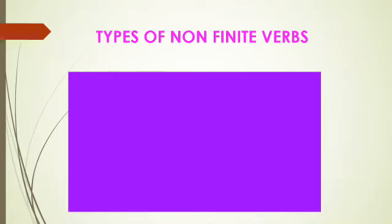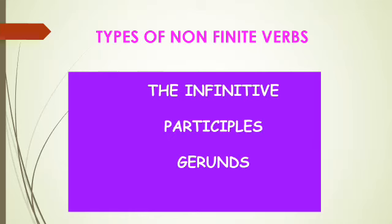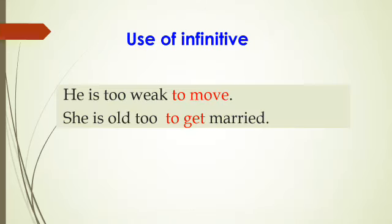Now let us see the examples. Non-finite verbs have three types: one is the infinitive, then participles, and gerunds. Infinitive, participles, and gerunds are the three types of non-finite verbs.